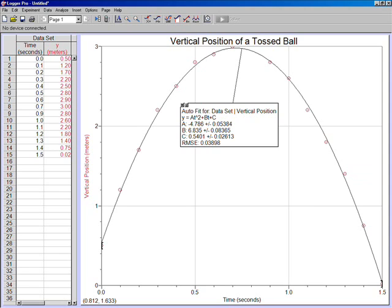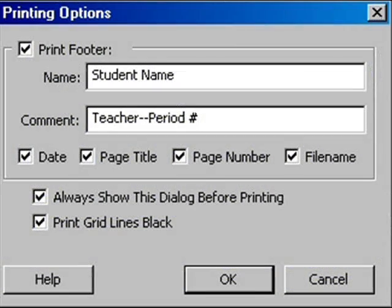Congratulations! You are now ready to save your graph and print. Save the file in a directory that you will be able to access again, and then print your graph. When you choose the Print command, a short menu will pop up asking you if you would like to print a footer. Check the box for Yes and enter your name and class information in the appropriate boxes. Go ahead and check all the boxes.